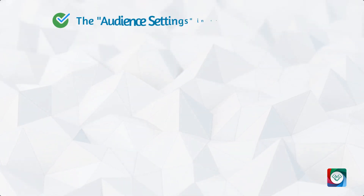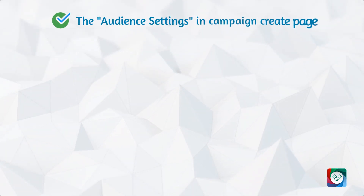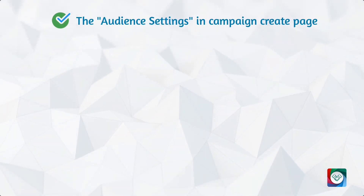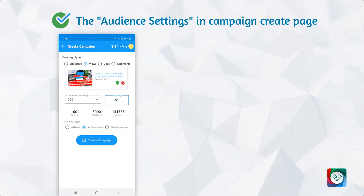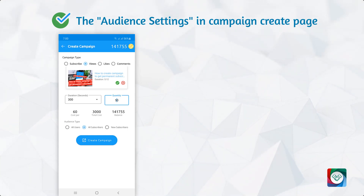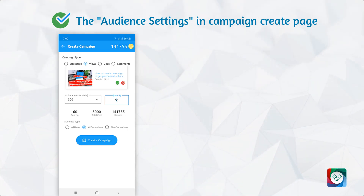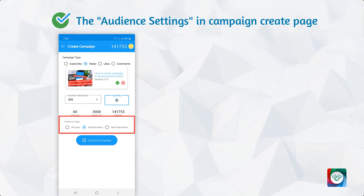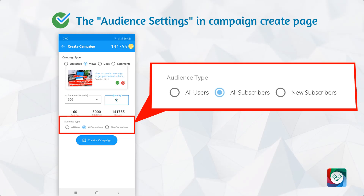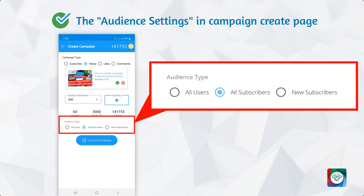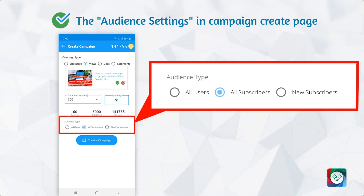Now let's move on to the second topic: audience settings in the campaign create page. Audience settings are very important to make your subscribers permanent, because using these settings you can control who will watch your videos and then like and comment.